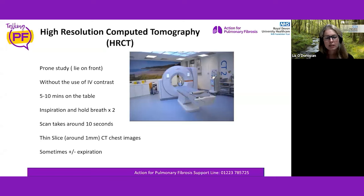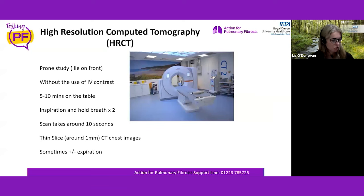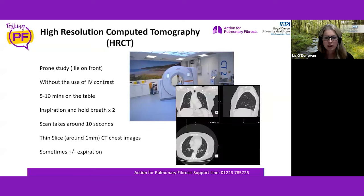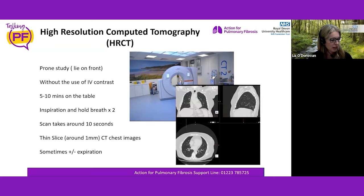The slices are thinner than a normal CT, giving much better appreciation of lung tissue and airways. We can fly up and down through the images like a video — top to bottom, front to back, side to side — and really scrutinise the airways and lung tissue.